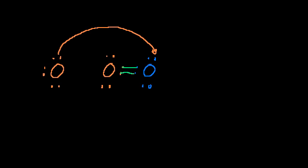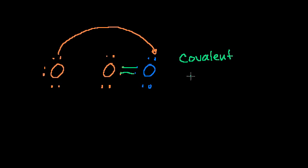So this oxygen has six electrons, but it can pretend it has eight in its valence shell because of the shared pair. The other oxygen does the same. This notion where you're actually sharing electrons — where these electrons go into both electron probability distribution clouds of both atoms — is called a covalent bond. This is typical when you're dealing with two elements that aren't very different in terms of their electronegativity or their desire to attract electrons.